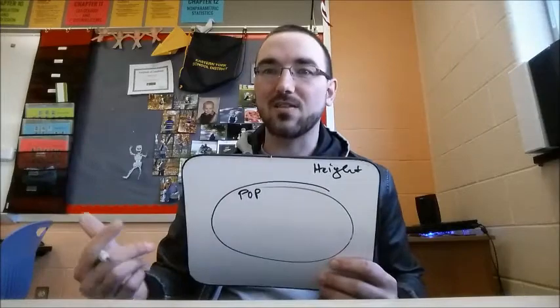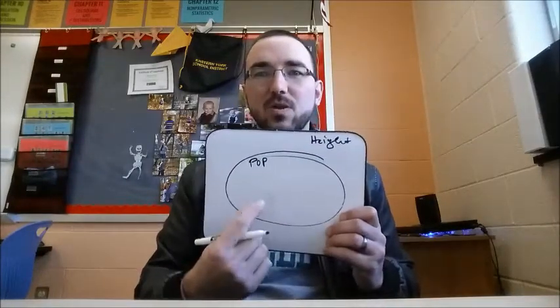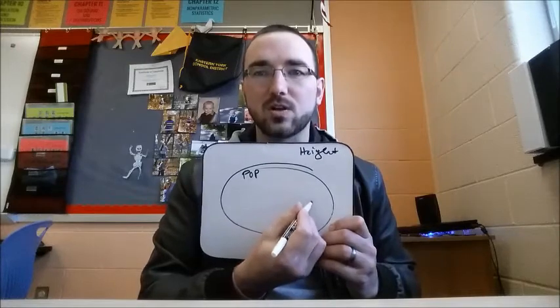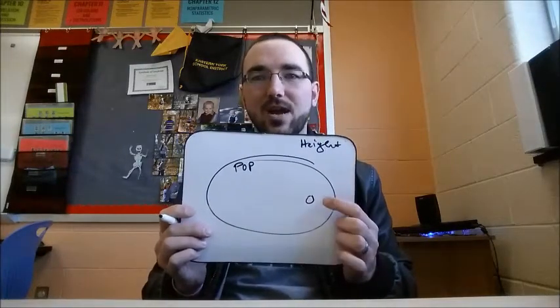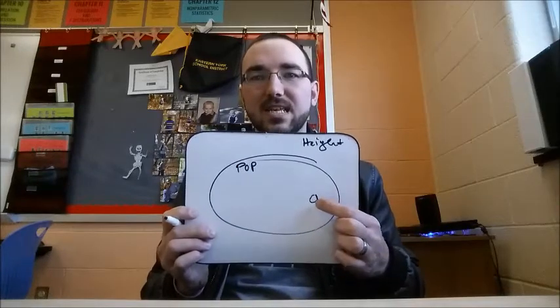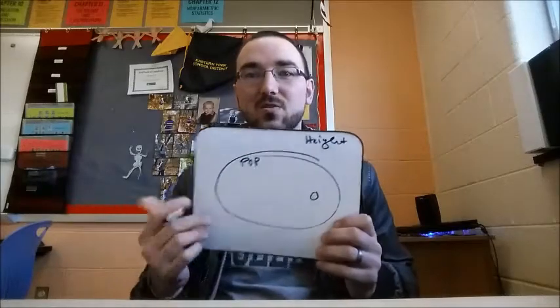And that's where the sample space comes in. So instead of looking at the entire population of people in the world, I'm just going to look at this, that little area right there, because this area is a lot easier to cover than the entire population. So this is called the sample.